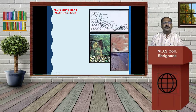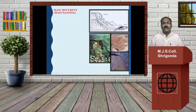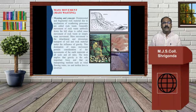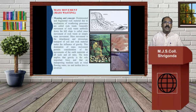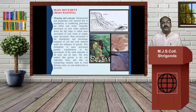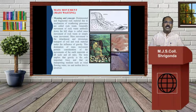What is meant by Mass Movement? It is a material flow down to earth. Mass Movement — Meaning and Concept: Disintegrated and fragmented soil and rock material, due to the mechanism of the weathering process, are called rock wastes. Generally, movement of rock wastes down the hill slope is called Mass Movement of rock wastes, or simply Mass Movement.